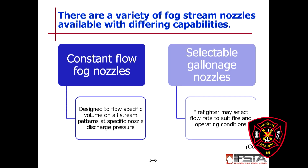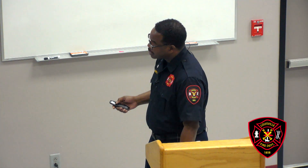There are a variety of fog stream nozzles available with different capabilities. You have your constant flow fog nozzle and your selectable gallon nozzle. The constant flow is designed to flow a specific volume on all stream patterns at a specific nozzle discharge pressure — so whether you're at wide fog, medium fog, or straight, it flows the same gallonage. With the selectable gallon nozzle, the nozzle operator can control how much water comes out.